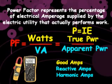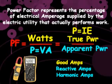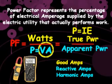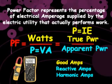So they gave the multimeter amp its own power equation. Instead of IE, it's VA. And instead of true power, it's called apparent power, because it looks like the extra power is apparently there — but it's not. Only good amps produce watts.